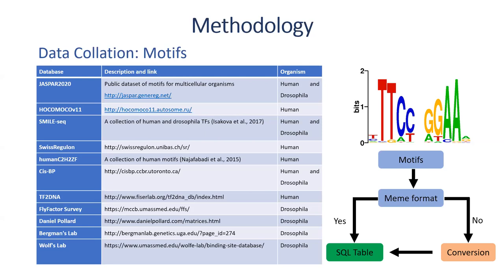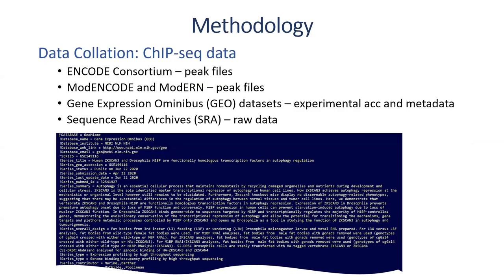For the ChIP-seq data, we collected from different sources — from ENCODE for human data, and ModENCODE and ModERN for Drosophila data. It is important to note that from ENCODE, ModENCODE, and ModERN, we collected peaks because the data from these databases are uniformly processed.